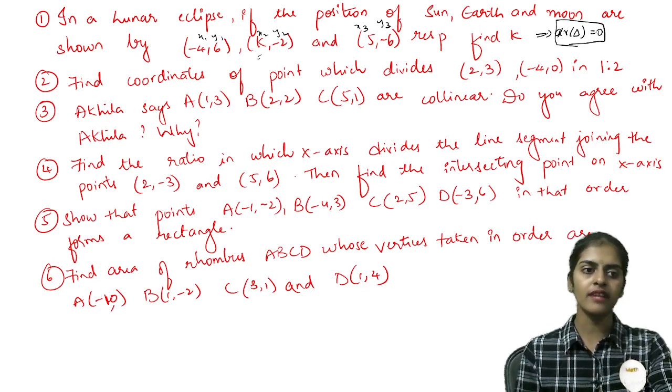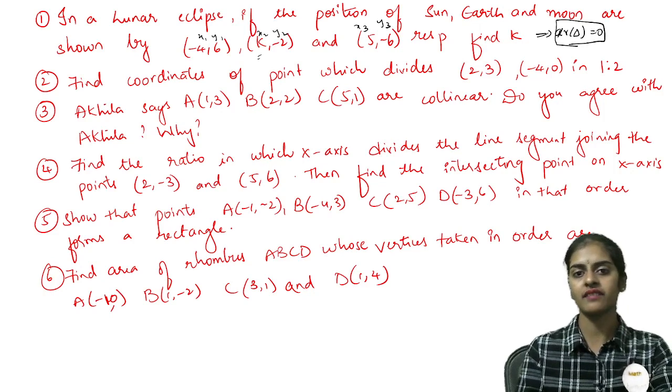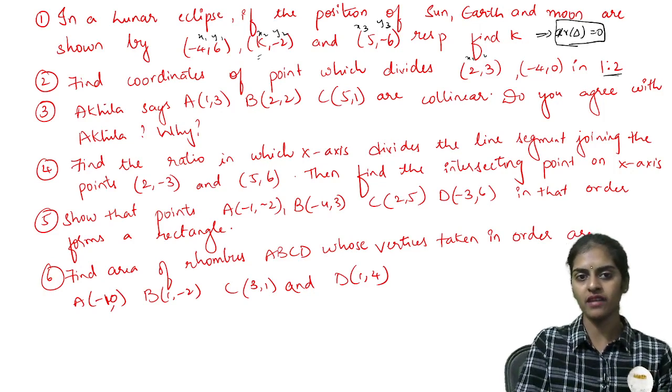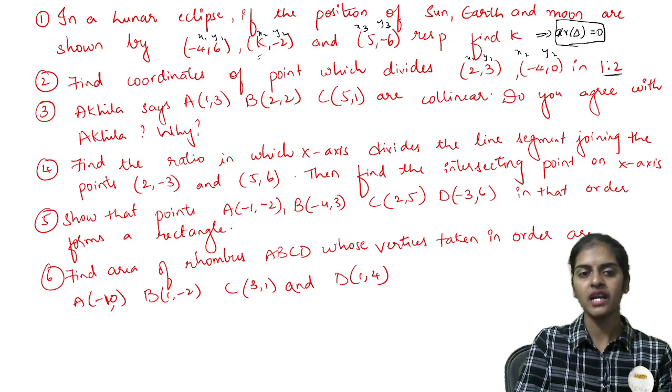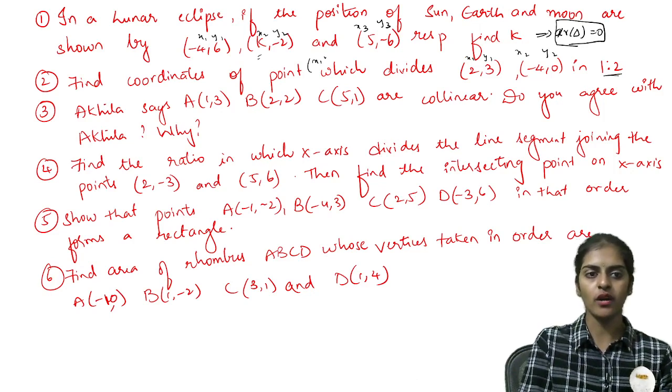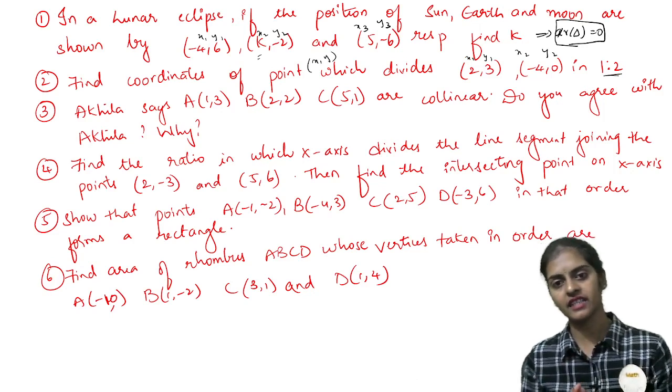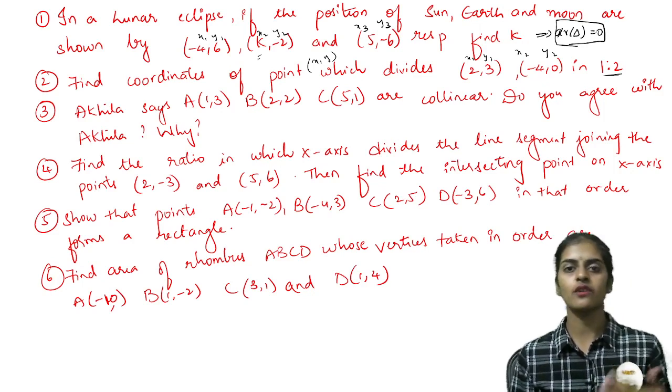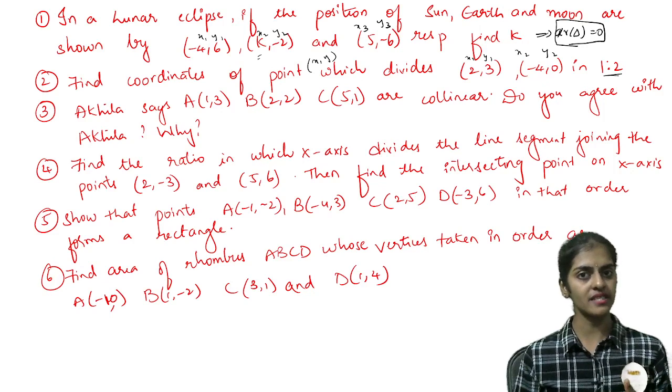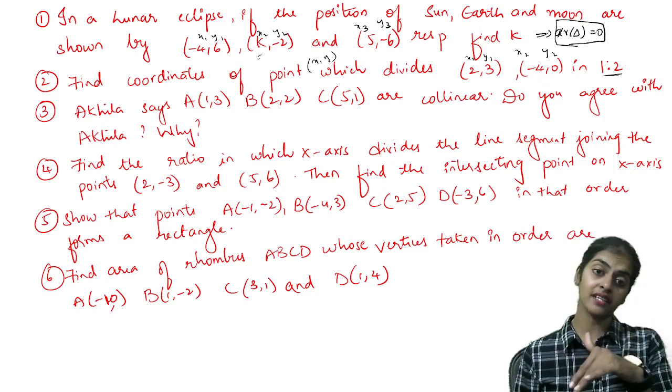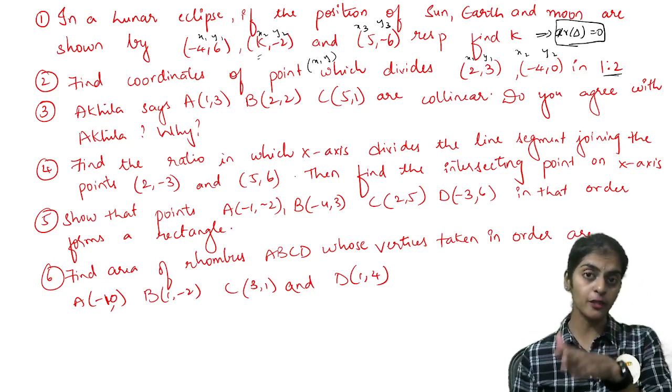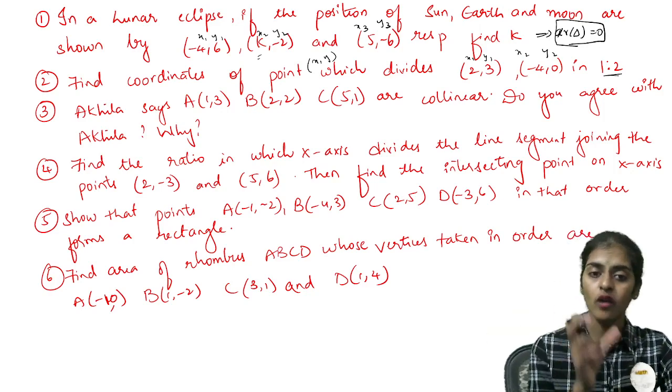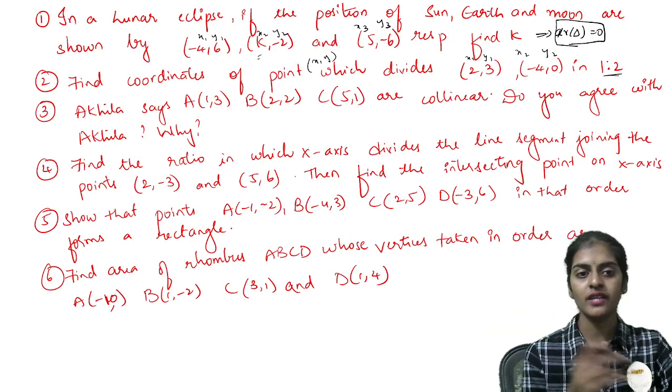Second question, find the coordinates of point which are divided in the ratio 1 is to 2. So I have two points, let this be x1, y1, let this be x2, y2. I need to find the coordinates of a point pxy which is dividing in the ratio 1 is to 2, which means simple section formula. So m1 x2 plus m2 x1 by m1 plus m2 and m1 y2 plus m2 y1 by m1 plus m2. These are the coordinates you will solve to get x and y.